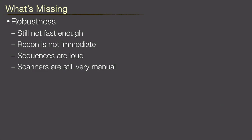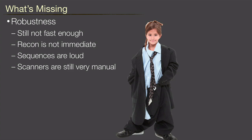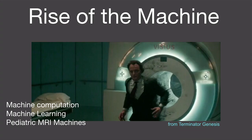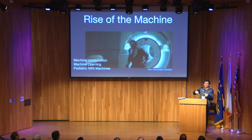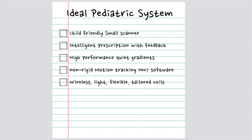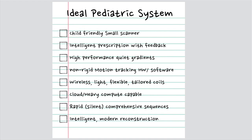What's missing? Robustness. It's not fast enough, recon is not immediate, sequences are too loud, scanners are still very manual. So we went from something like this to something a little better but slightly awkward — still not perfect. Here comes the rise of the machine. The machine is not just machine learning — it's computation, machine learning for acquiring and reconstructing and interpreting data, leveraging automation, and maybe creating a pediatric-dedicated MRI scanner that is small. My list for an ideal pediatric scanner: child-friendly and small, intelligent, high performance, able to do motion correction, wireless flexible coils, no wires, cloud heavy compute capable, rapid, silent, comprehensive sequences, and very intelligent modern reconstruction.